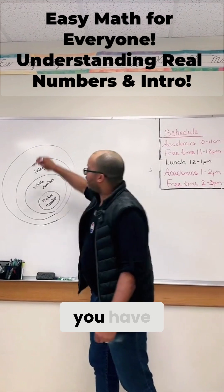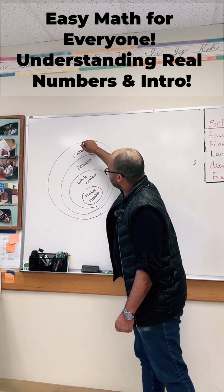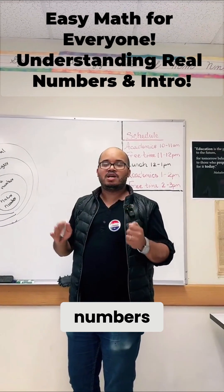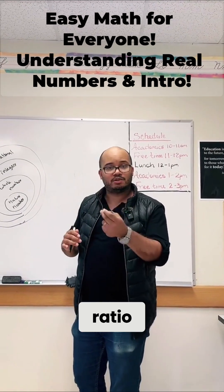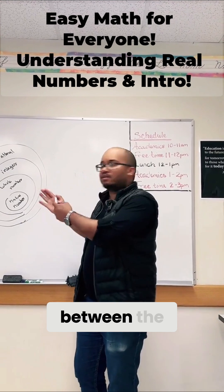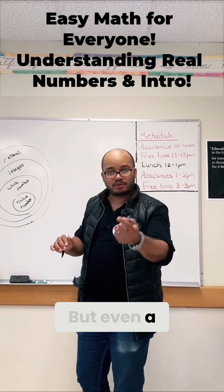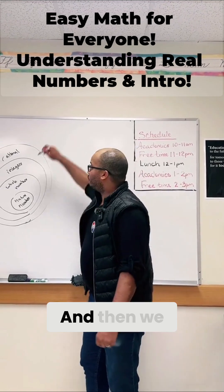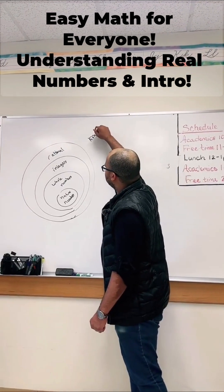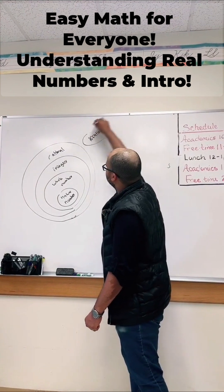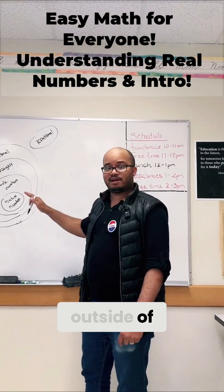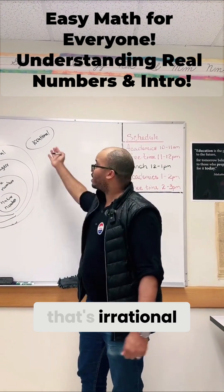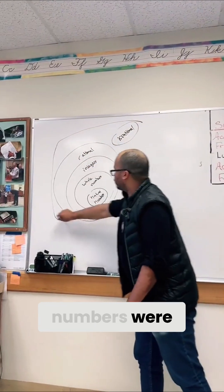But then you have numbers that are rational. Rational numbers are numbers that you can show as a ratio, as a fraction — those would be the numbers in between the whole numbers. But even a whole number can be considered a rational number because you could turn a whole number into a fraction. And then we talked about irrational, which is outside of rational — so if you can't change it to a fraction, like the number pi, that's irrational. And then we said all these numbers were real numbers.